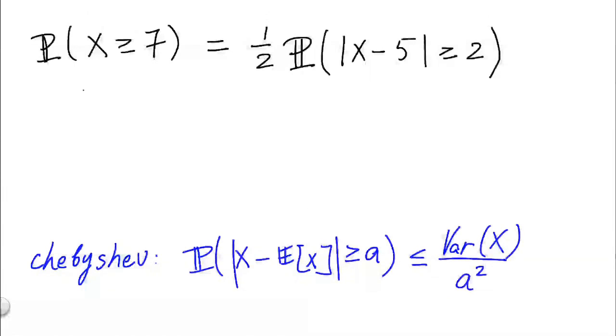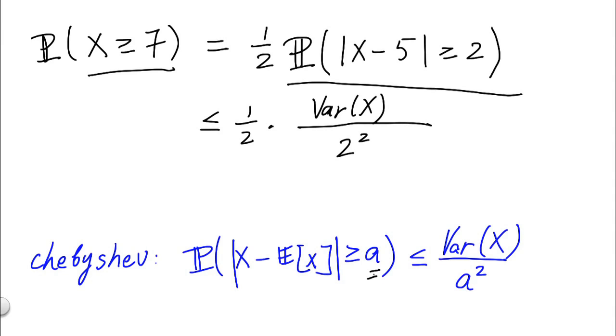At this point, we have transformed the probability of x greater or equal to 7 into the form such that we can apply the Chebyshev inequality. We'll write the probability as being less than equal to 1/2 times, applying the Chebyshev inequality, variance of x divided by 2 squared. Now 2 is the same as a.